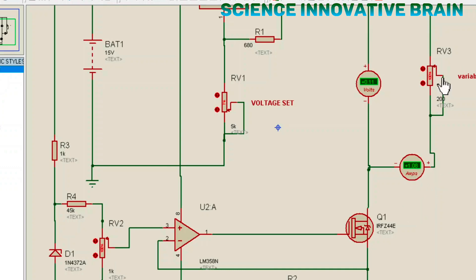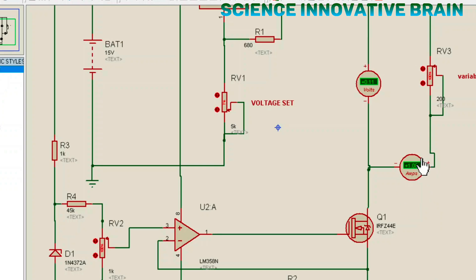The maximum current flowing in short circuit condition is now 1 ampere. If I reduce the output load value, the current will also reduce and the voltage comes back to 10 volts, because it is no longer in short circuit condition. Whatever voltage we set will appear, and the current will vary accordingly as the load changes. Now I will set the current value to minimum — we can also set the minimum current value.